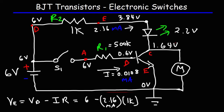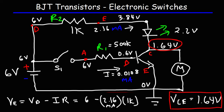So if you were to connect the multimeter between the collector and the emitter, you would read a voltage of something around 1.6 volts. So that's also VCE — the collector-emitter voltage — approximately 1.64 volts. Now you know how to solve a simple transistor circuit, and you can see how a transistor can be used as an electronic switch — using a small current to drive a larger current in another circuit. And that's how most transistors work as switches.